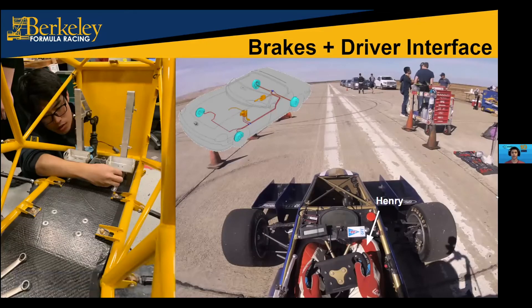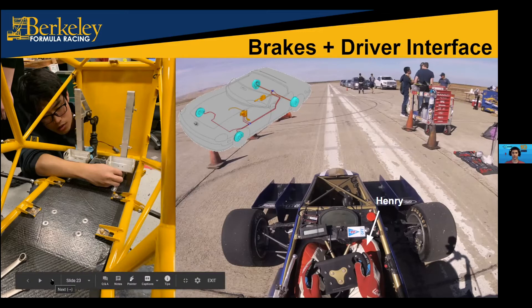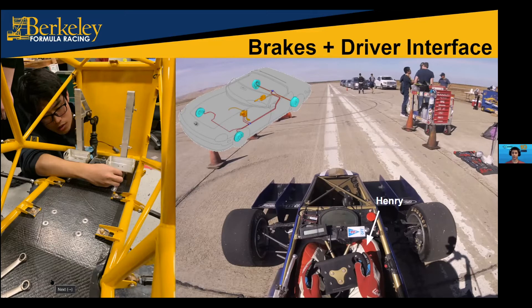Brakes and driver interface combines two parts of the car. The diagram shows the braking system highlighted in red and blue — they're included together because the driver interacts with the brakes quite frequently. The interaction between the driver and the car is really important. Unless it's well-thought-out and executed, no matter how fast the car is or how talented the driver is, they won't be able to produce fast lap times. This includes optimizing seat position and steering wheel design. This year we're working on implementing a system for the driver to adjust braking bias while driving.